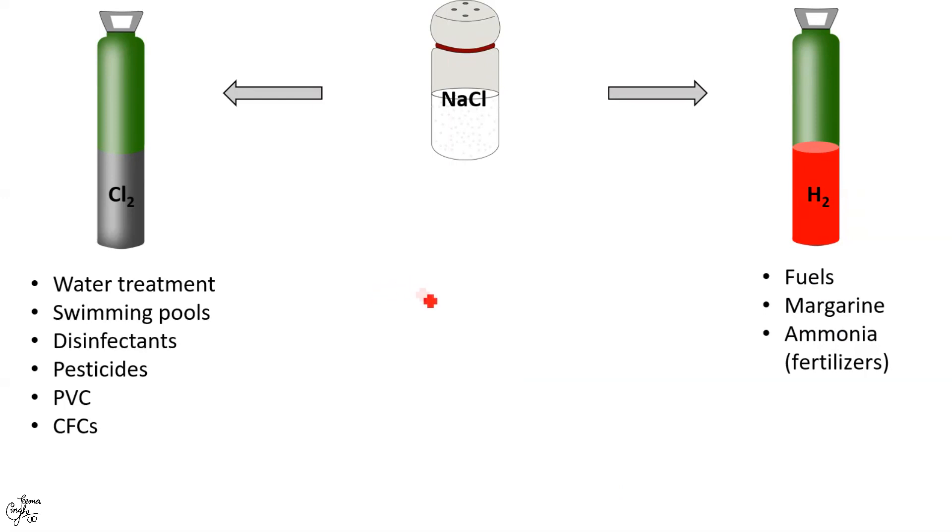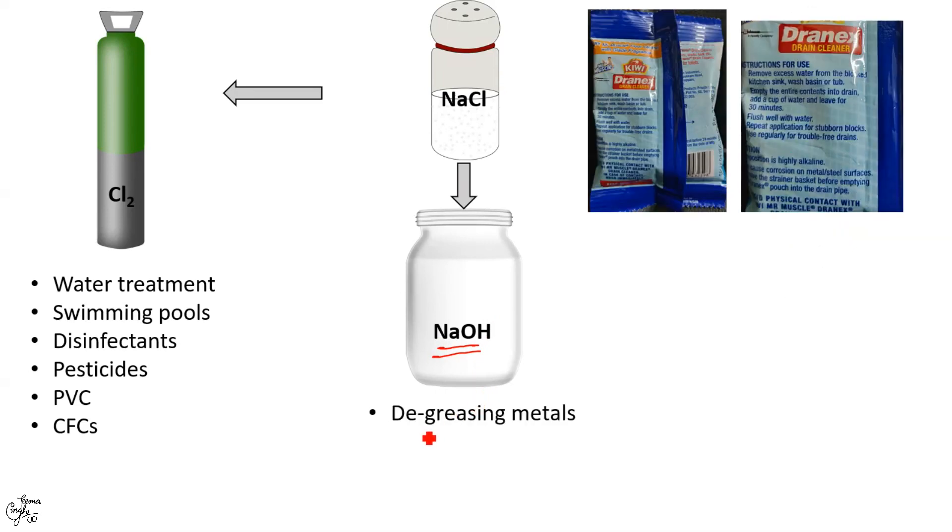Now coming on to the uses of sodium hydroxide which is frequently used as an industrial cleaning agent for degreasing metals. It is often called as caustic when it is used as cleaning agent in industries. It can dissolve grease, oil, fats and protein based deposits.